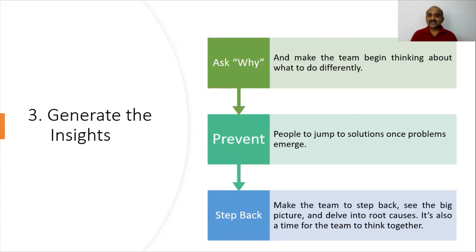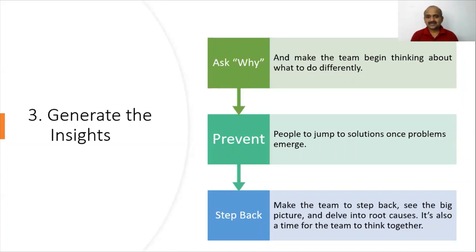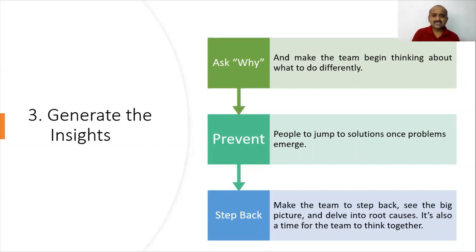Step three is generating insights. During conversations, when people say this is good or this is not good, as scrum masters we should ask why. We have to make them think about how things could be done differently. If someone says that person did not cooperate, don't jump to solutions. Ask questions: why do you think that person acted that way? What do you think was their motive? How would you have handled it differently?